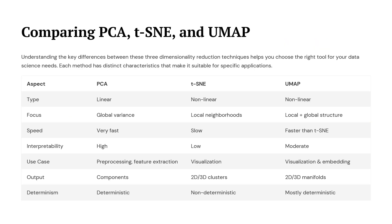Here is a quick comparison of PCA, t-SNE, and UMAP. PCA is a linear method that focuses on global variance — it is very fast and easy to interpret, making it great for pre-processing and feature extraction. t-SNE is non-linear and focuses on local neighborhoods; it is mainly used for visualization because it creates clear 2D or 3D clusters, but it is slow and less interpretable. UMAP is also non-linear but preserves both local and global structure — it is faster than t-SNE, more stable, and works well for visualization as well as embedding. Each method has its strengths, so the right choice depends on your data and your goal.